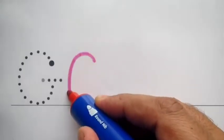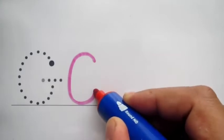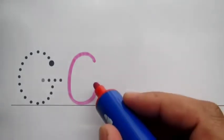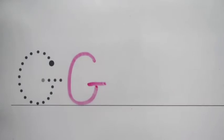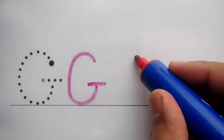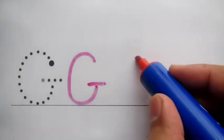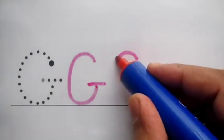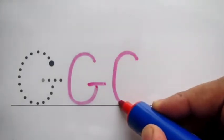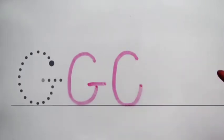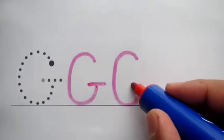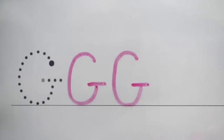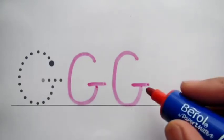We will start making a curve and then we will make a slipping line. In letter G, there is a curve and two lines — one is a slipping line and a standing line.